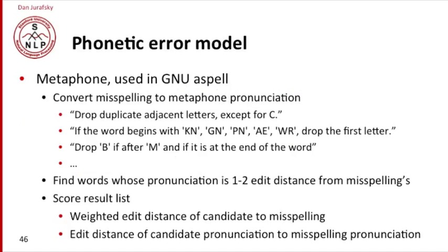Something else used in state of the art systems is to use not just the spelling but the pronunciation of the word to help find errors. The Metaphone system, which is used in GNU Aspell, instead of just asking for candidates that have a similar spelling, asks for candidates that have a similar pronunciation. That's done by first converting the misspelling to a pronunciation. Metaphone is a simplified pronunciation system — a set of rules that convert a word into something approximating a pronunciation.